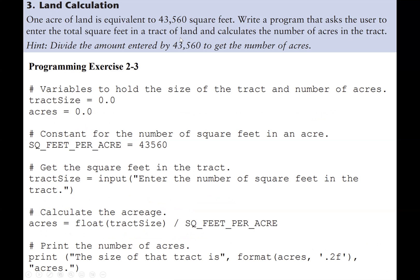and calculate the number of acres in the tract. Now remember here, they gave us that one acre of land is equivalent to 43,560. So we can divide the amount entered by 43,560 to get the number of acres.